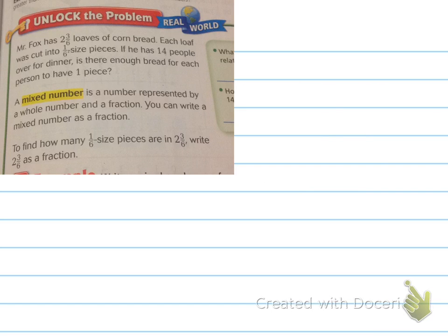So, Mr. Fox has two and three-sixths loaves of cornbread. Each loaf was cut into one-sixth size pieces. If he has fourteen people over for dinner, is there enough bread for each person to have one piece? There's our mixed number definition. And it says below that, to find how many one-sixth size pieces are in two and three-sixths, write two and three-sixths as a fraction.